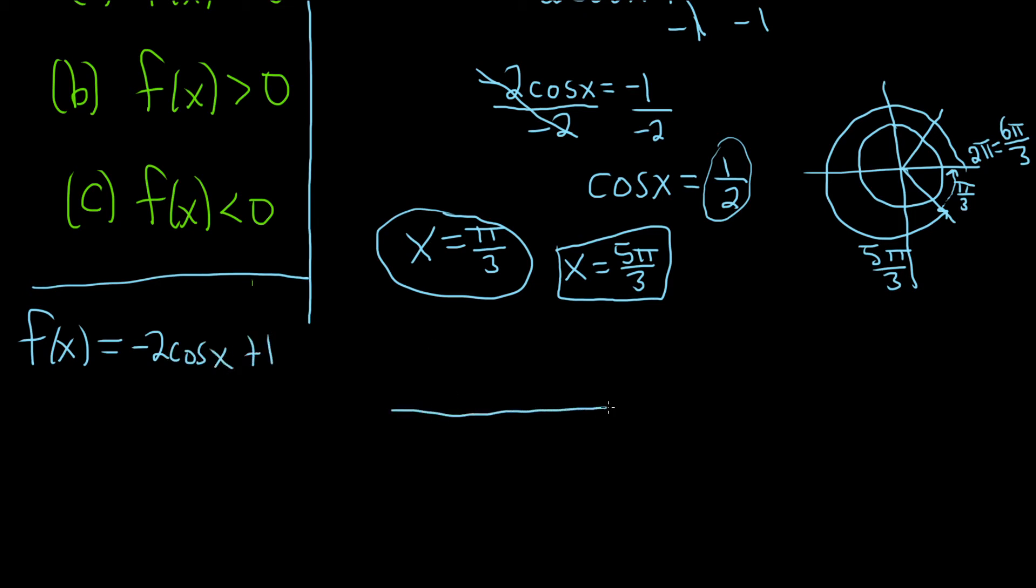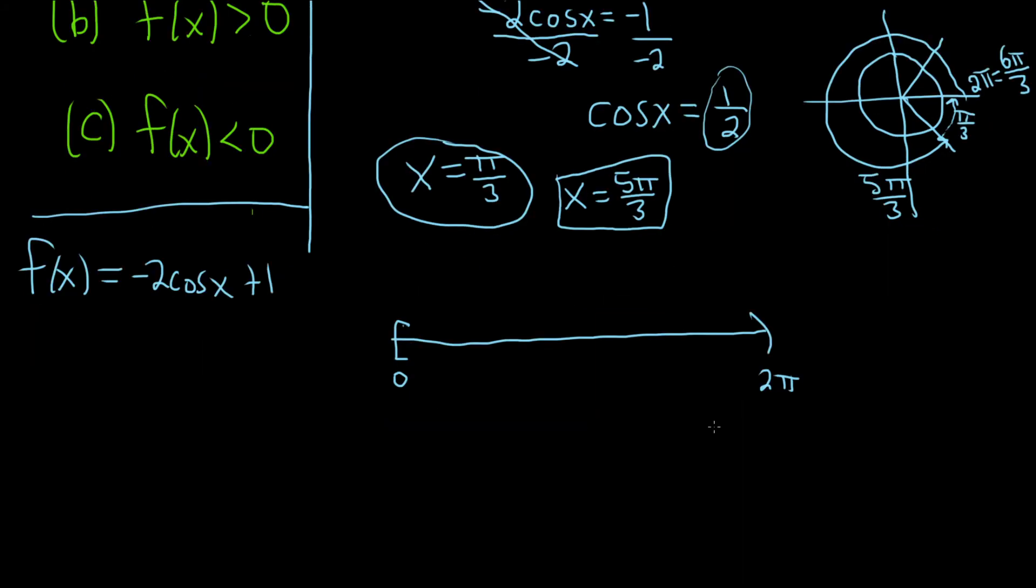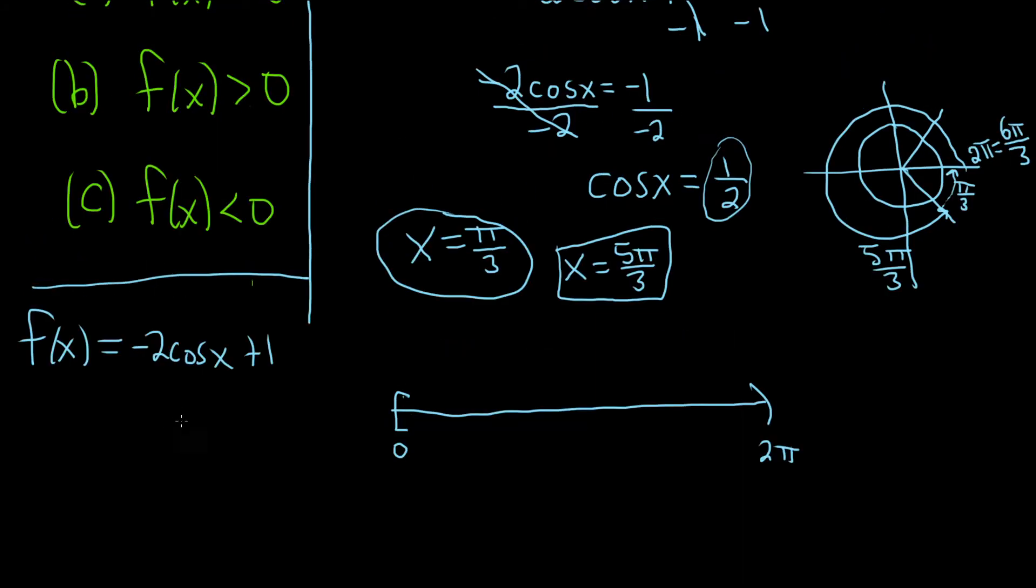And I'm going to draw a number line. So, here's our number line. And then, we're including 0. Actually, we're not including, it's a strict inequality, but I'll include it, just in case. And then, we have 2 pi here. Yeah, so we might actually use 0. And we plot our numbers. So, pi over 3, and then here we have 5 pi over 3.